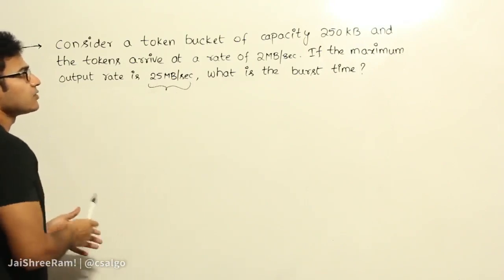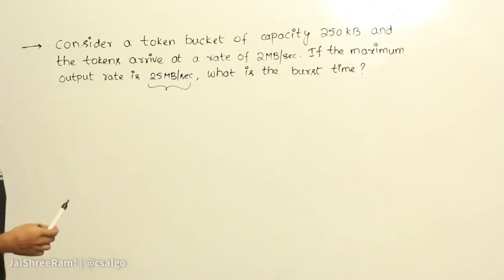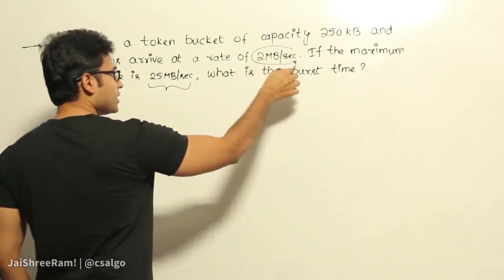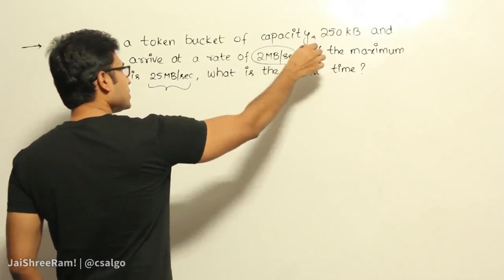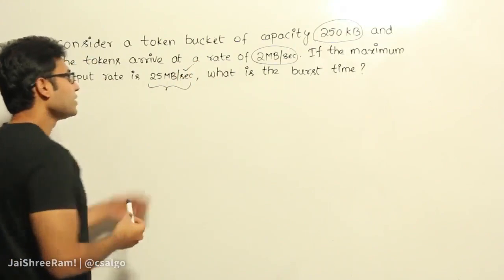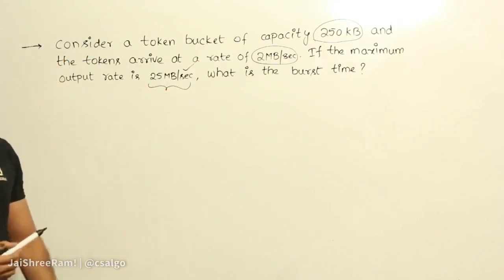how much time would it have taken to achieve this? So how much time if you are going to get the tokens and if this is the initial capacity, how much time should you wait by that time you get this maximum of 25 Mbps. So how to solve this?